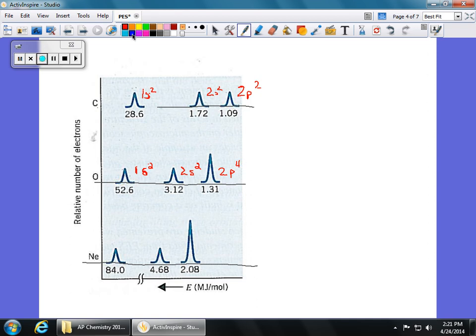Neon. And we can do that one. Neon is going to be 1s2. It's going to be 2s2. 2p6. And really important, what do we notice? This peak is about three times higher than the peak before it because there's going to be six electrons. The six electrons means that peak is going to be higher because this is the relative number of electrons on the y-axis.